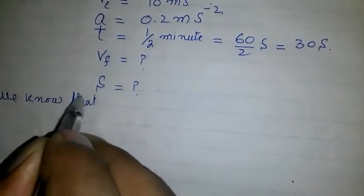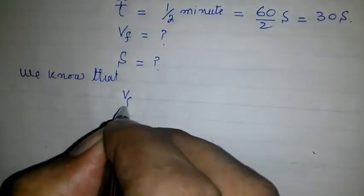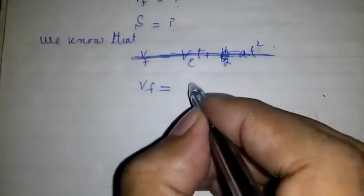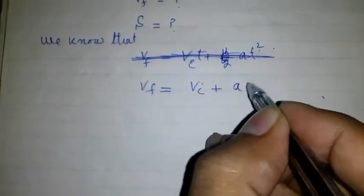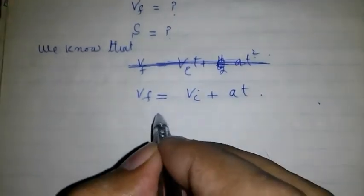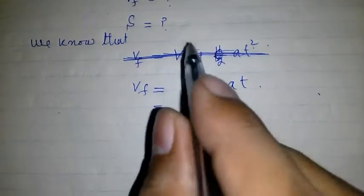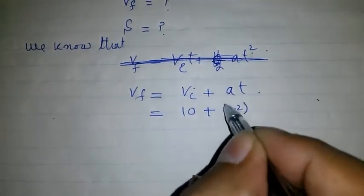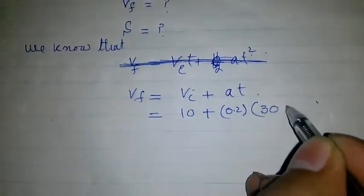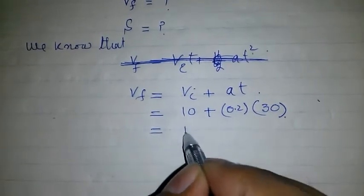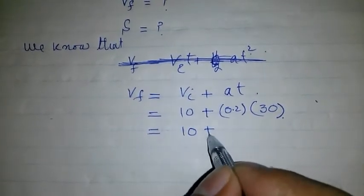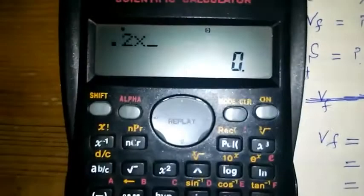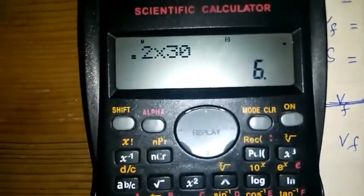We know that Vf is equal to Vi plus at. From the first equation of motion, Vf is equal to, now we are putting the values, 10 plus 0.2 into 30, which is equal to 10 plus, we multiply 0.2 into 30 which is equal to 6.